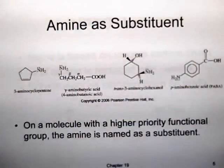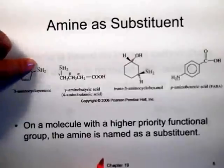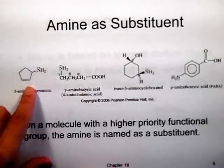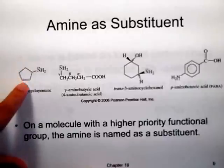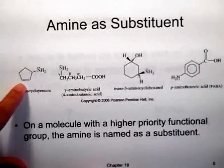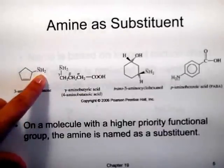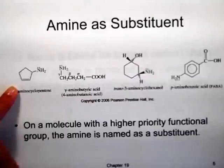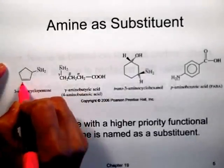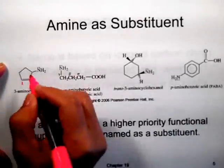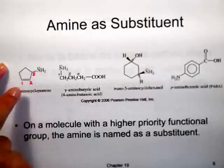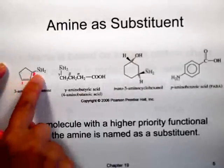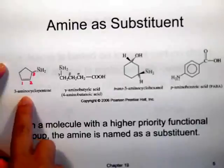If the amine is not the most important substituent on the compound, then you have to name it as just a substituent. For example, this molecule has both an amine and a double bond. The double bond takes precedence over the amine, so the parent name is cyclopentene. The carbons of the double bond get positions 1 and 2, and we try to give substituents attached to the ring the lowest possible number. Starting at position 1, the amine gets number 3, so this is 3-aminocyclopentene.